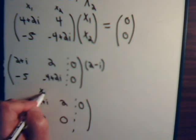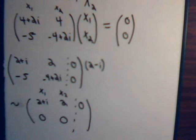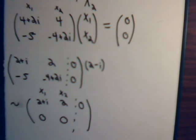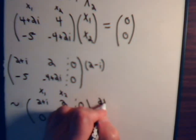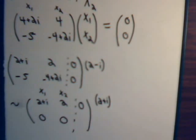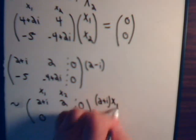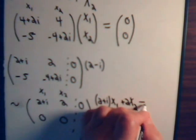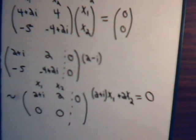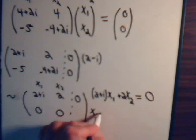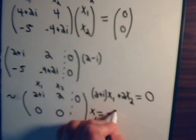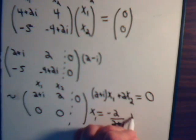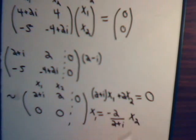So, of course, this corresponds to x1. This corresponds to the x2 column. So, x1 is the free variable. x2 is the lead variable. And we have 2 plus i times x1 plus 2 times our free variable equals 0. Or we have x1 equals minus 2 divided by 2 plus i times the free variable x2.